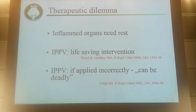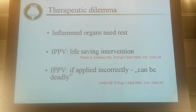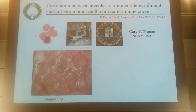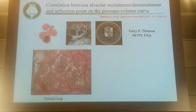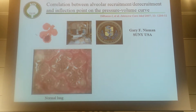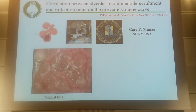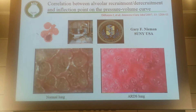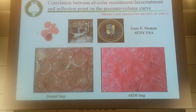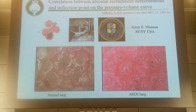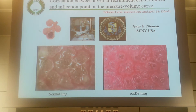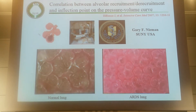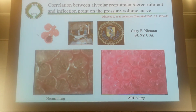If we apply IPPV incorrectly, it can be a deadly weapon. This slide from Gary Neelan shows a normal lung with alveoli that are open — increasing in size on inspiration and decreasing on expiration. This next image is an ARDS lung. Towards the end of inspiration the alveoli open up, but as the volume and pressure drops they close down again. This repetitive opening and closing on its own can be deadly to our patients.